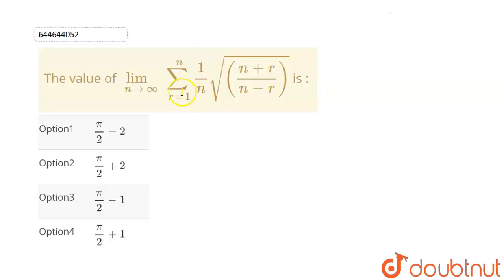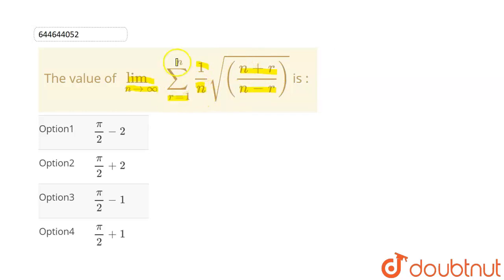The given question is: find the value of limit n tends to infinity, summation of (1/n) times the square root of (n+r)/(n-r), where r goes from 1 to n.